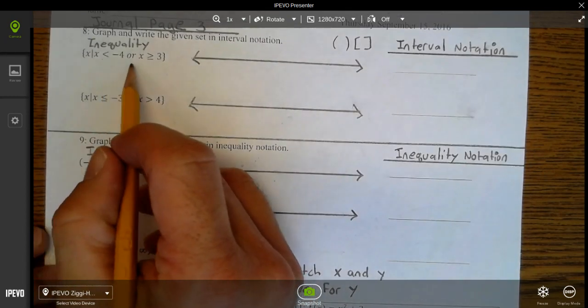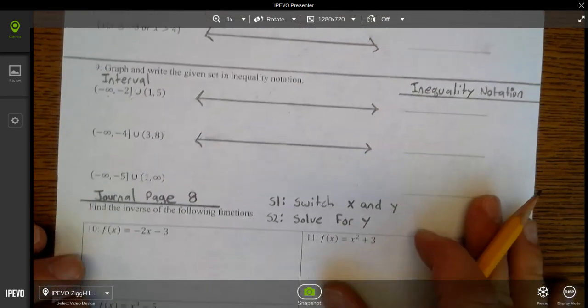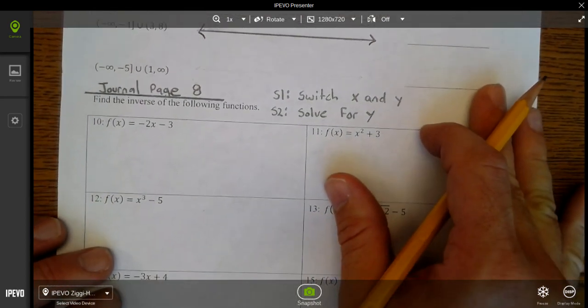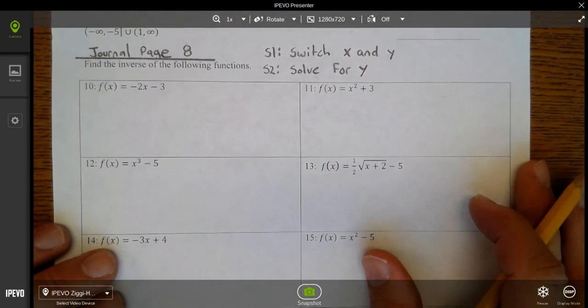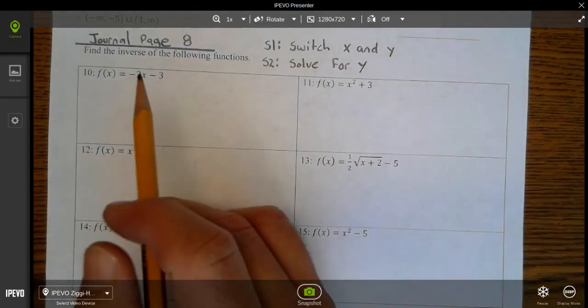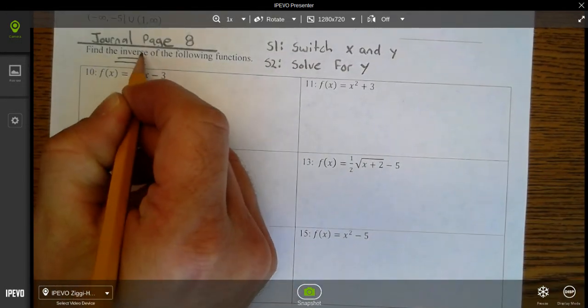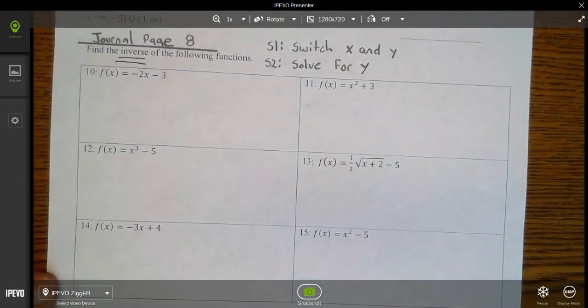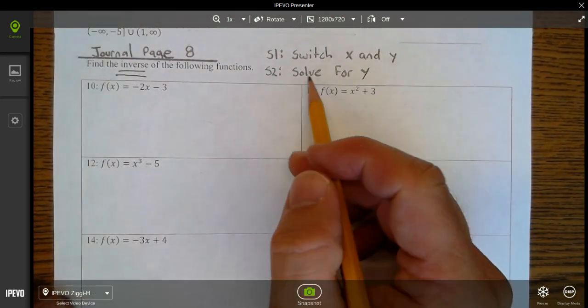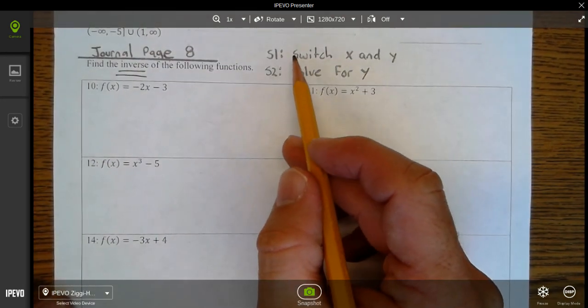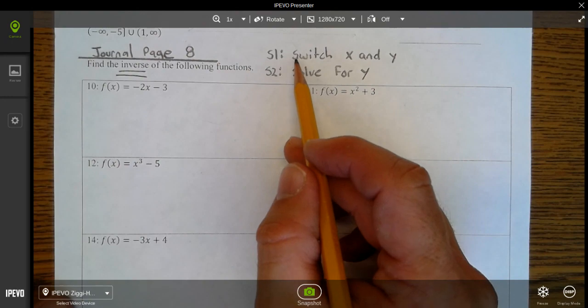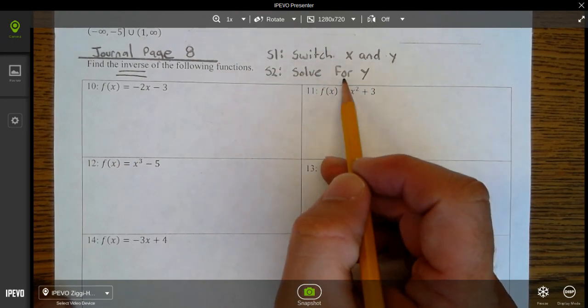The last thing from the review is to find the inverse, and that can be found on journal page 8. I've just written some quick reminders: to find the inverse, you switch x and y, and then step two is solve for y.